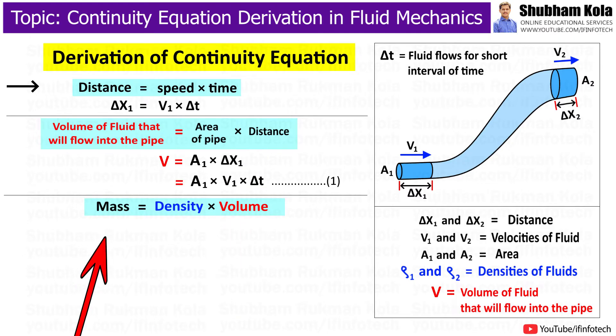And we know that mass equals density times volume. Therefore, mass in region delta x1 will be delta m1 equals rho 1 times volume of fluid that will flow into the pipe. Where in equation, we have formulated volume of fluid as A1 V1 delta t. So I will substitute this.